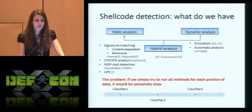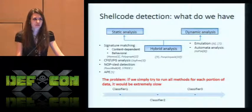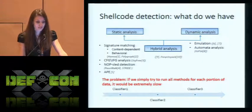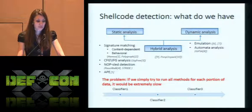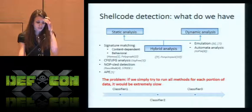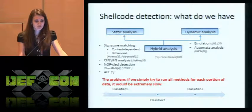So what do we have in terms of shellcode detection methods? Mostly it exists in research papers only — if someone knows available open source tools, I would be very happy to hear about them. As for tools described in research papers, we can divide them into two classes: static analysis methods, dynamic analysis methods, and hybrid also. The most common techniques used by static analysis are signature matching, control flow graph analysis, instruction flow graph analysis, NOP-sled detection, and methods of abstract execution. Dynamic analysis methods are presented by emulation and automata analysis techniques, and hybrid methods can use all of those.